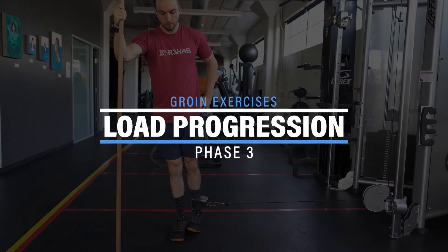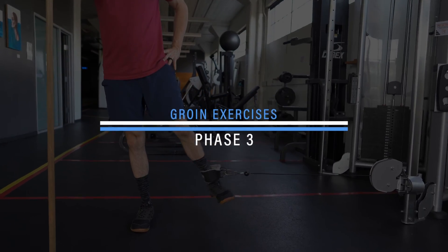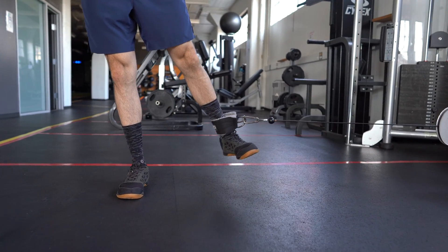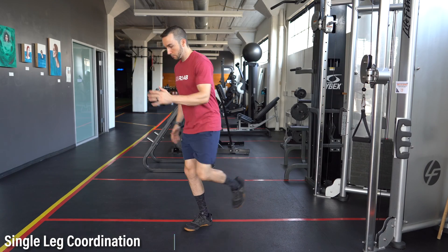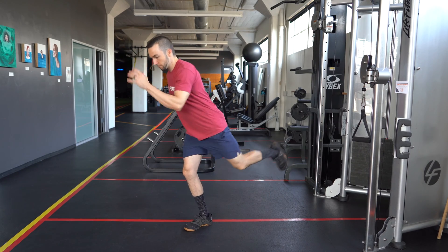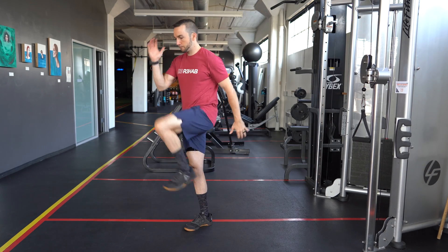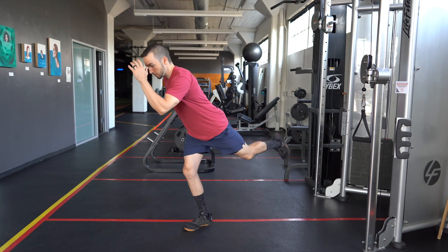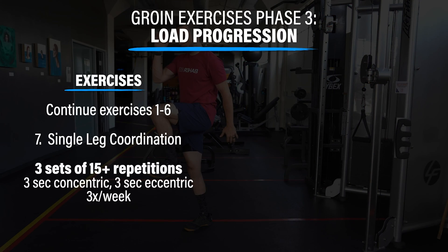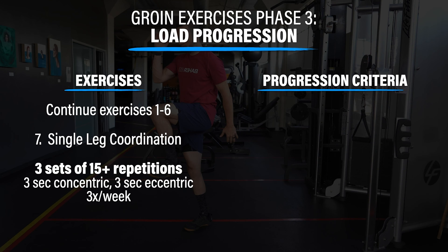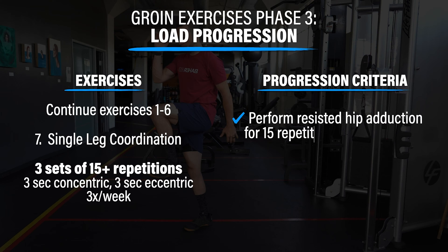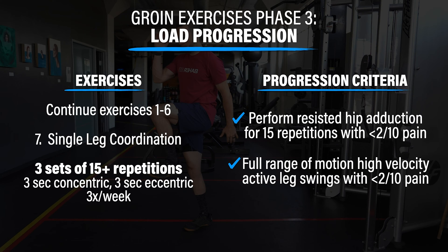Groin exercises phase three: load progression. You will continue the previous exercises but increase volume and intensity, and add in a single-leg coordination exercise. While standing on one leg, swing the opposite leg through hip extension and flexion with the arms following a reciprocal pattern. Perform three sets of 15 to 20 repetitions on each side with the same tempo, three times a week. To progress, you should be able to perform resisted hip adduction for 15 repetitions with less than 2 out of 10 pain and have full range of motion during active leg swings at a high velocity.